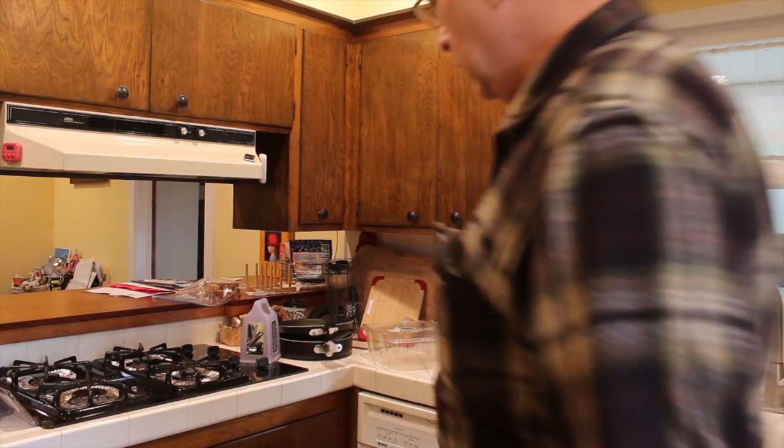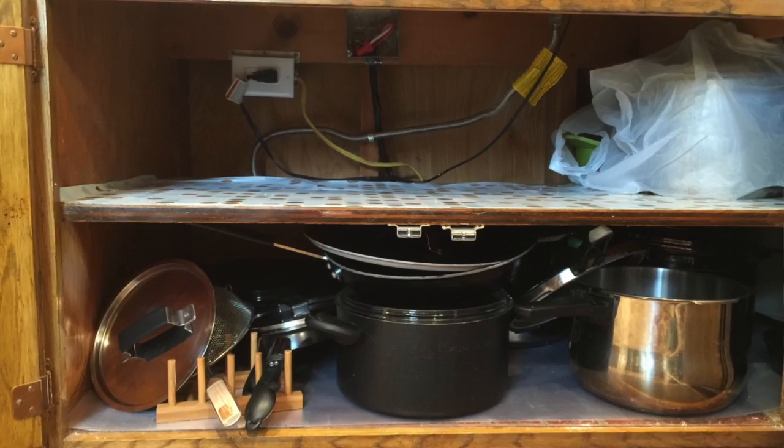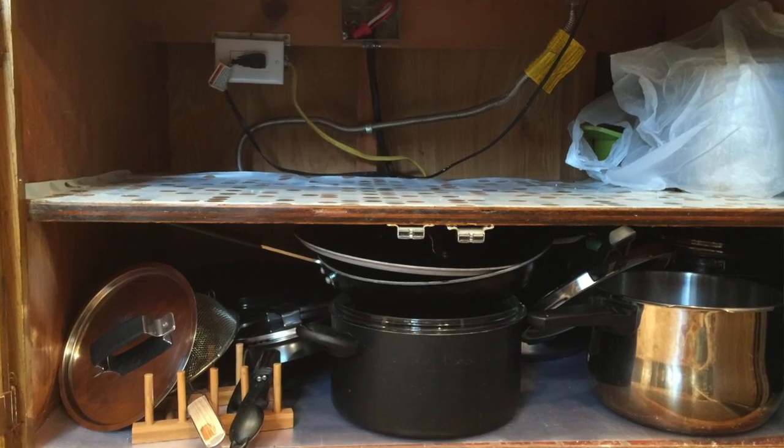Okay, this is Andrew, welcome back. Today we're back in the kitchen for another project. Down here under the stove there's electrical service, but on the other side below the breakfast bar there's no electrical at all. But it's a perfect place to set up a slow cooker, crock pot, or rice maker.